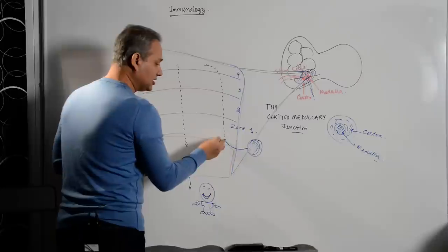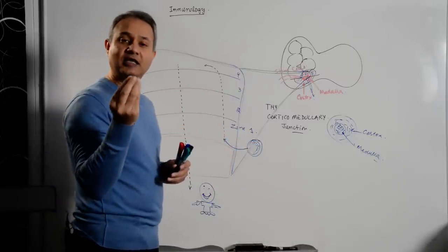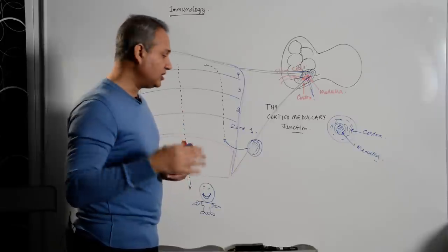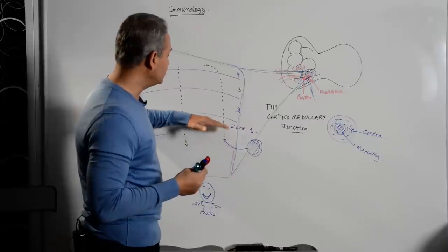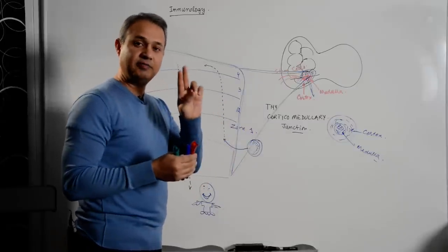Once the stem cell comes in, once it is inside the thymus, the cell will be called thymocyte. So thymocyte is not different from stem cell. The only thing is a thymocyte as it goes through the process here will be maturing and will be getting selected.